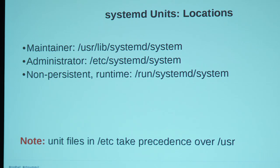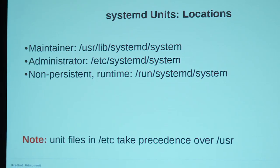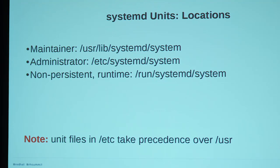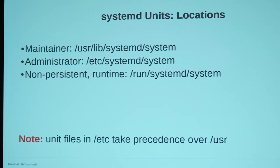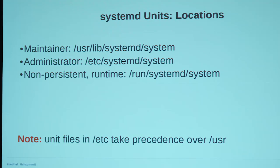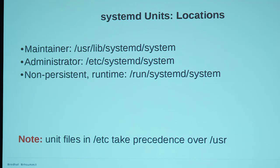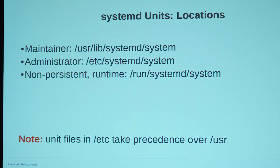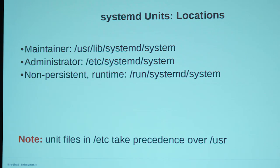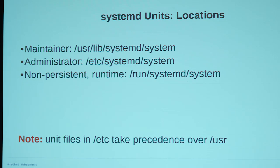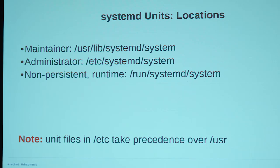Now, locations — I want to call this out because I've seen so many bad blog posts where this is wrong. Don't edit a unit file under /usr/lib/systemd/system. This is where RPMs put unit files, and if you edit them there, they're not flagged as config files — they're going to get overwritten. /usr/lib/systemd/system is for RPMs, ISVs, and Linux distributions. The administrator space is /etc/systemd/system. Things that go in /etc will override /usr/lib if they have the same name. And /run/systemd/system is for non-persistent, runtime changes.